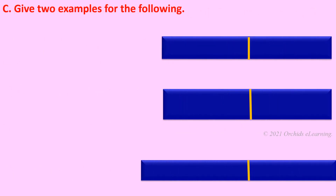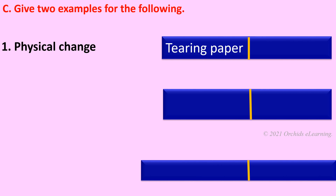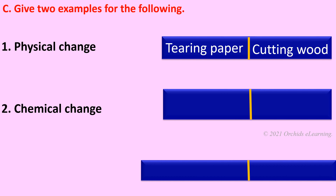Give two examples for the following. Physical change: tearing paper and cutting wood. Chemical change: